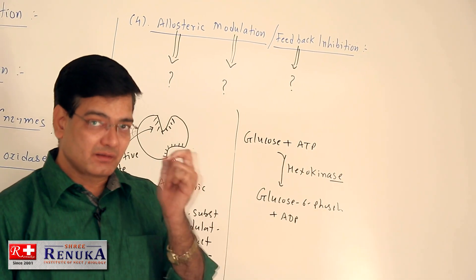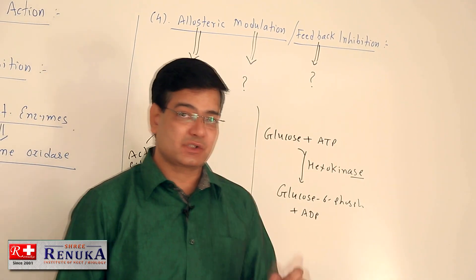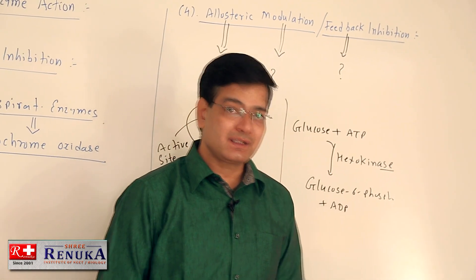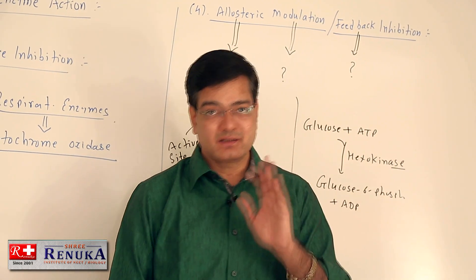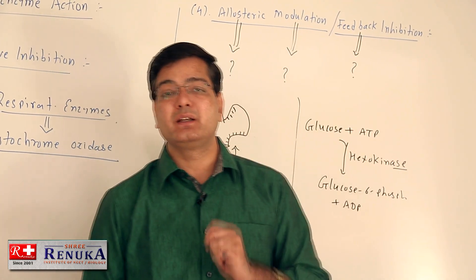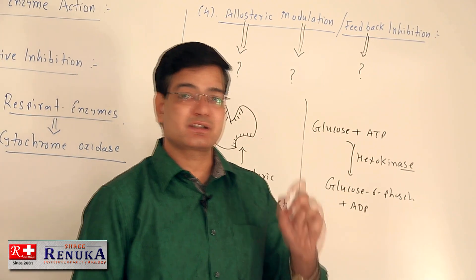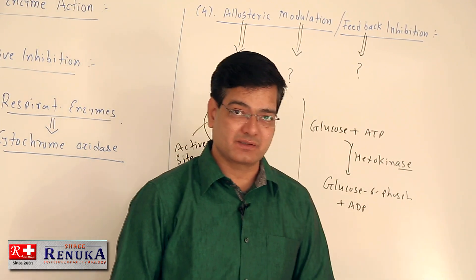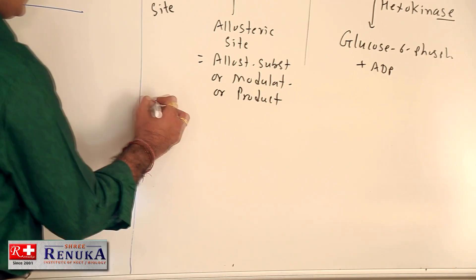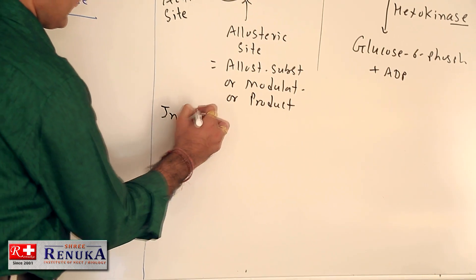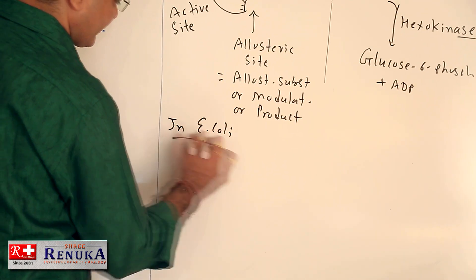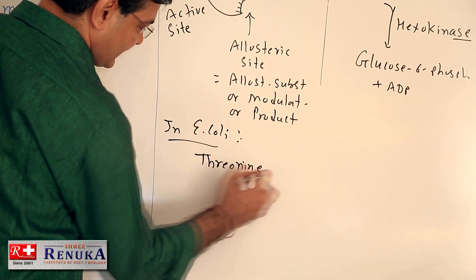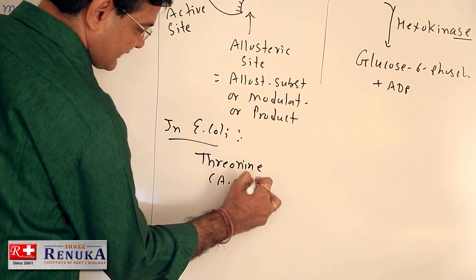The effect of the reaction — in the form of the product or otherwise — itself inhibits the reaction, which is why it is called feedback inhibition or the feedback mechanism. For example, in E. coli bacteria, threonine, an amino acid, is converted into alpha-ketoglutaric acid by the enzyme threonine deaminase.